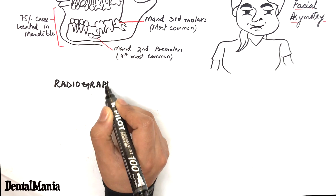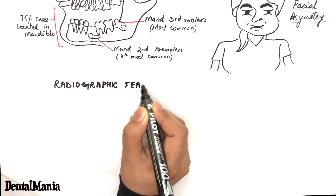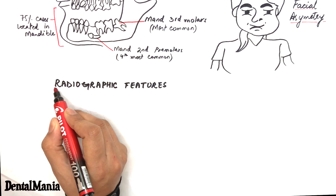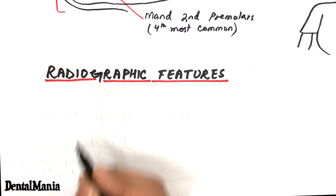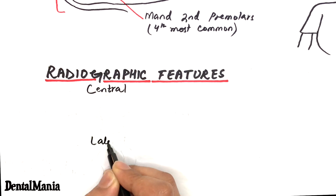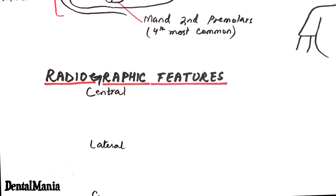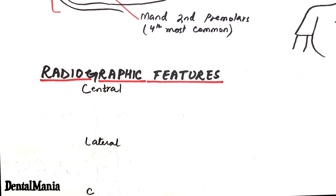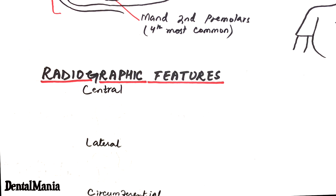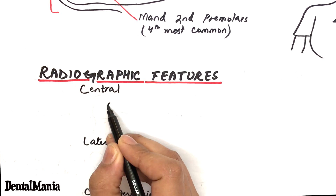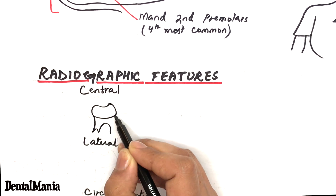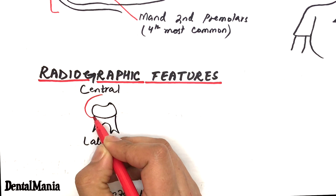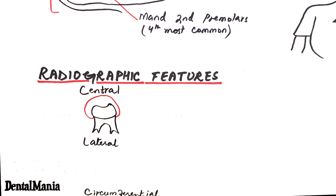Radiographically, the cyst may surround the unerupted or impacted tooth in three variations: the central, the lateral, and the circumferential variants. In the central variety, which is the most common type, the cyst surrounds the crown of the tooth and the crown projects into the cyst.